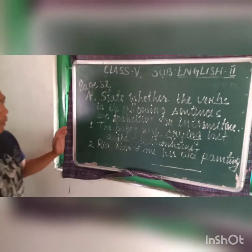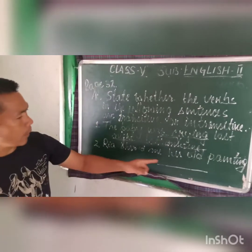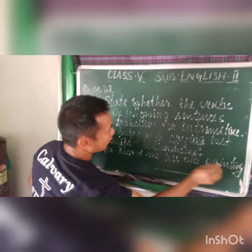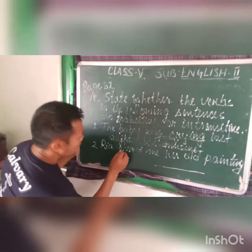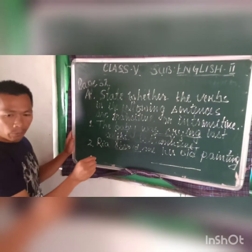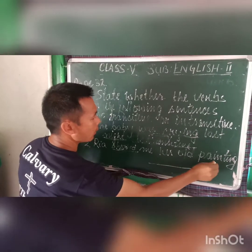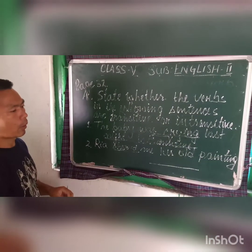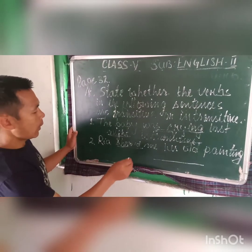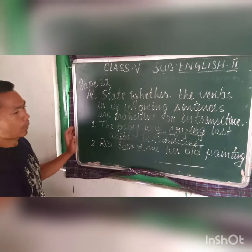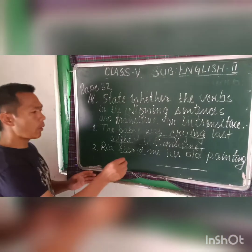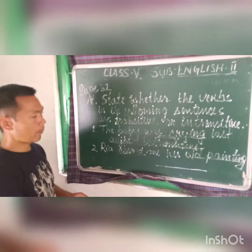Let us see the second sentence — whether the verb in this sentence is transitive or intransitive. Which one is the verb here? 'Saw' is the verb. Now, is 'saw' transitive or intransitive? In order to know this, we have to check the remaining words, whether they are the object or not. We have to ask the question 'what' — 'What did Ria see?' — and the answer is 'her old painting.'